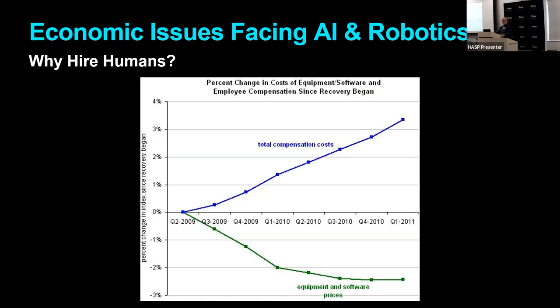This graph was produced shortly after the financial crisis of 2008. It shows that even as we were recovering, when jobs were hard to come by and people really couldn't demand much in the way of wages, total compensation costs were rising while the cost of equipment and software was dropping. I don't think anyone believes that those curves have changed their shape in recent years. People are getting more and more expensive; machines are becoming less expensive.